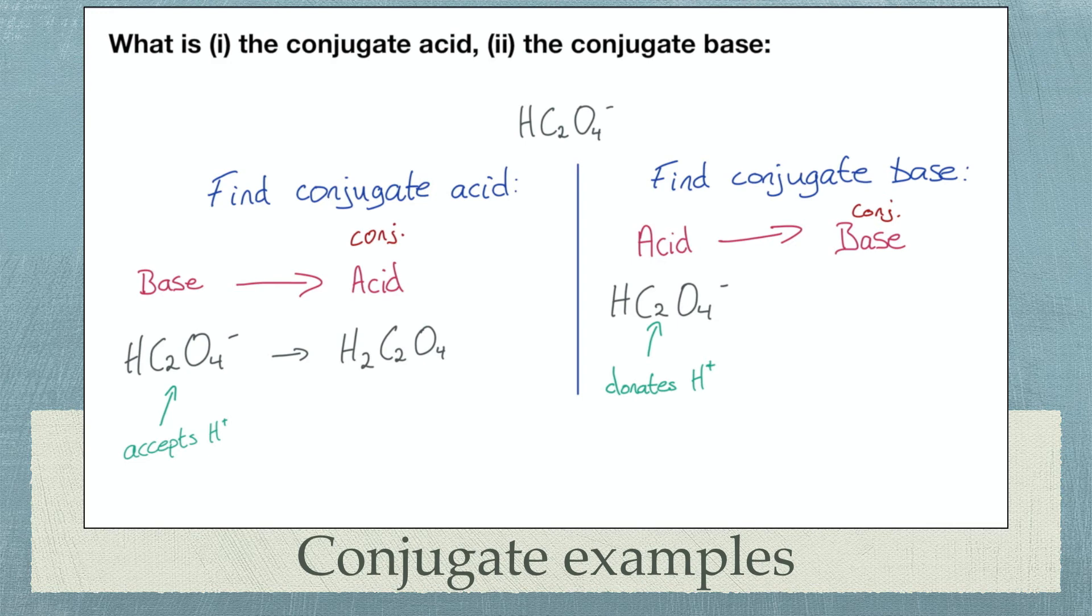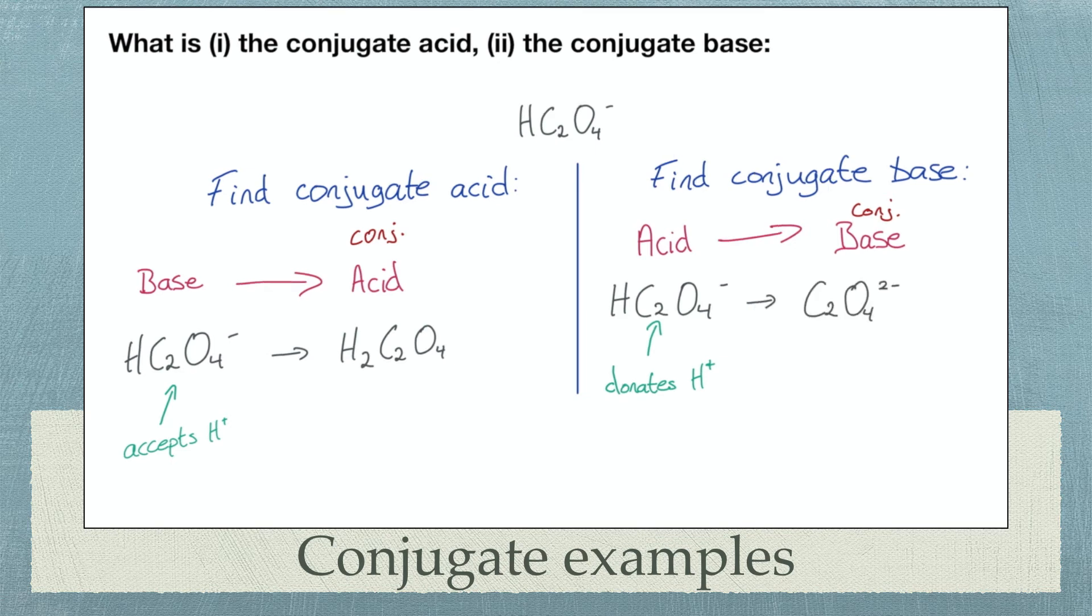Step 2. Remember Bronsted-Lowry definition. An acid is a proton donor. So we lose a H plus ion. Step 3. Double check the charges. You are removing something positive from a negative complex ion. So we are left with a 2 minus complex ion.